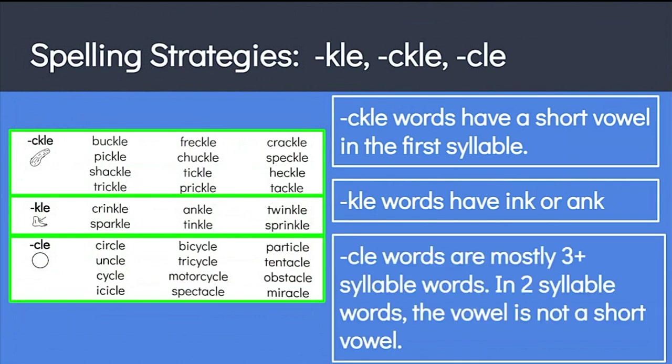And words with the CLE spelling, which is the most common spelling for this sound, you may have noticed are mostly three-syllable words starting with the word icicle, bicycle, tricycle, motorcycle, spectacle, etc. There are just three two-syllable words in this section: circle, uncle, and cycle. But notice that, with the exception of the word uncle, the other two words don't have a short vowel sound. The word circle has a bossy R sound, and the word cycle has a long vowel sound. So we can think about all of these patterns and apply them to spelling the words.